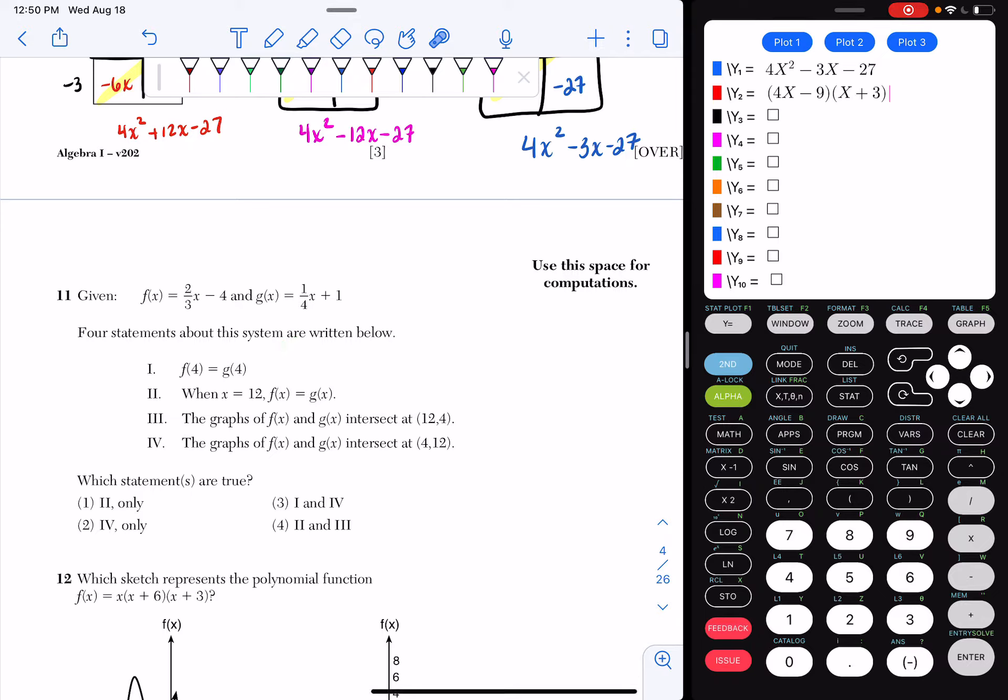Roman numeral 1 says f of 4 equals g of 4. Roman numeral 2 says when x equals 12, f of x is equal to g of x. 3 says the graphs of f of x and g of x intersect at 12 comma 4. And then 4 says the graphs of f of x and g of x intersect at 4, 12.